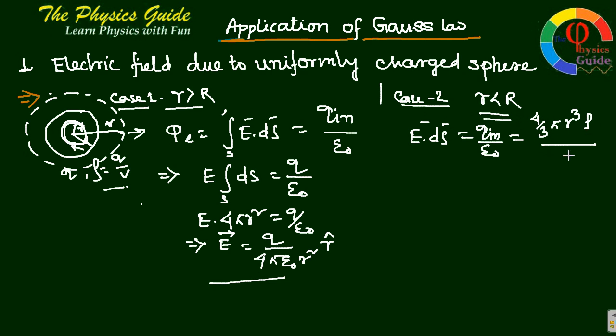This implies, like the previous case, E times 4πr² equals 4πr³ρ by 3ε₀. This implies E equals rρ by 3ε₀.